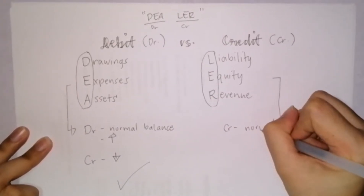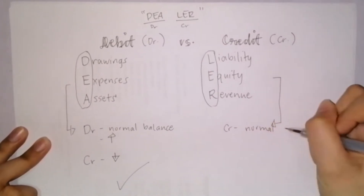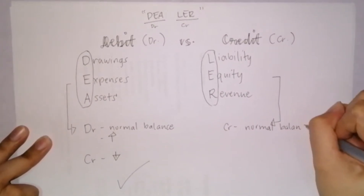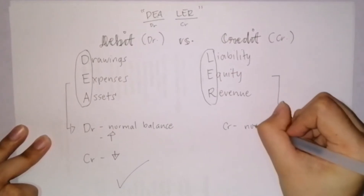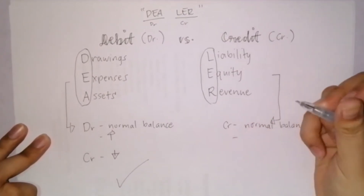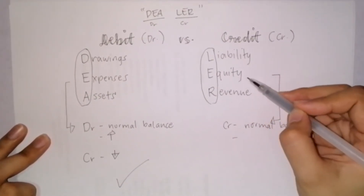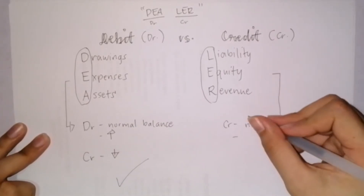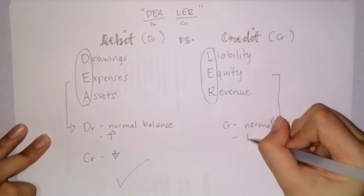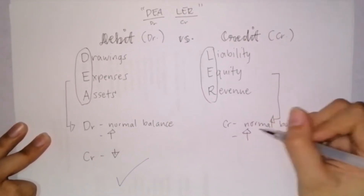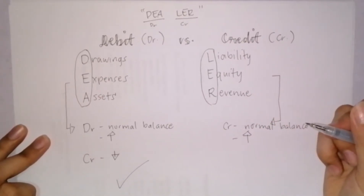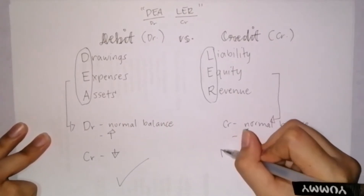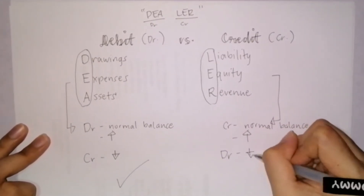When we say credit as their normal balance, when liability, equity, and revenue accounts increase, you record a credit. On the other hand, when these three decrease, you record a debit.